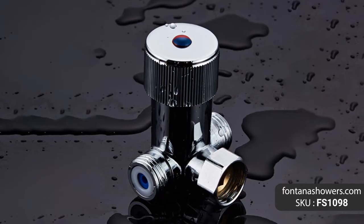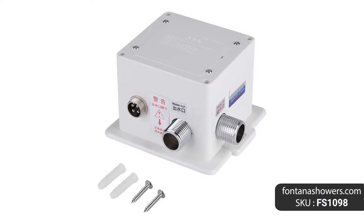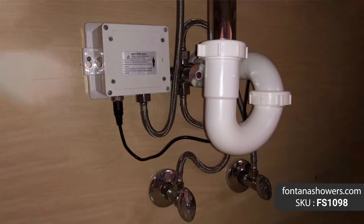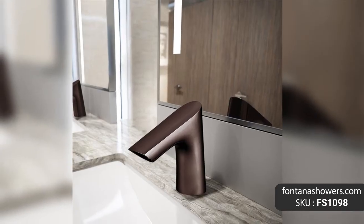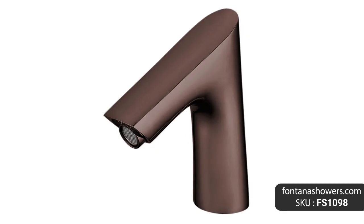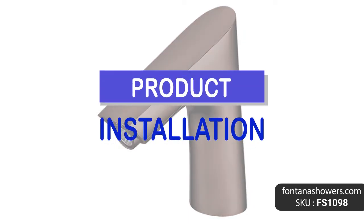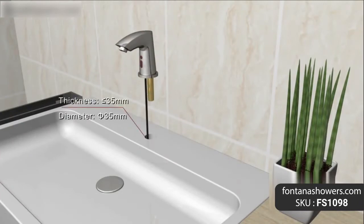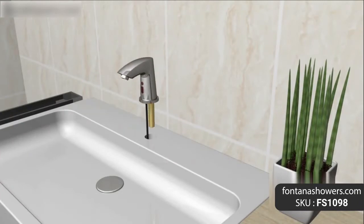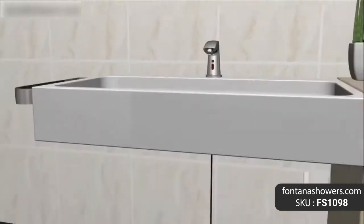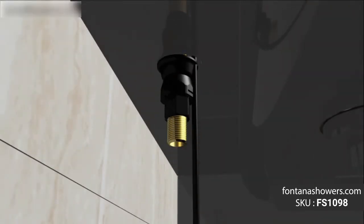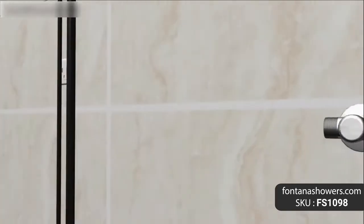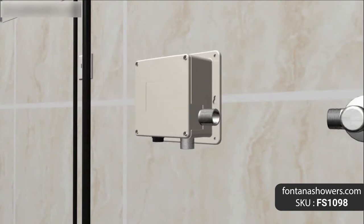Fontana Commercial Light Oil Rubbed Bronze Touchless Automatic Sensor Faucet, product code FS1098. This touchless volume sensor faucet is in a class of its own. It has an oil rubbed bronze finish which sets your restroom apart from others. The infrared sensors enable totally hands-free operation, effectively preventing the transfer of germs.